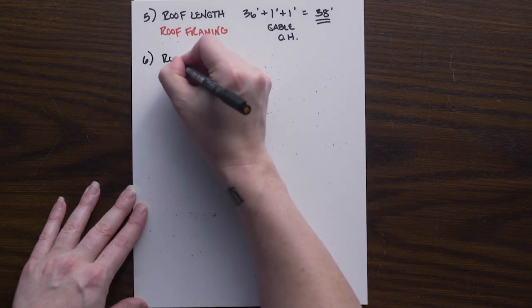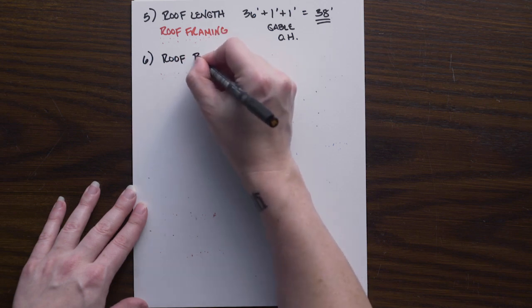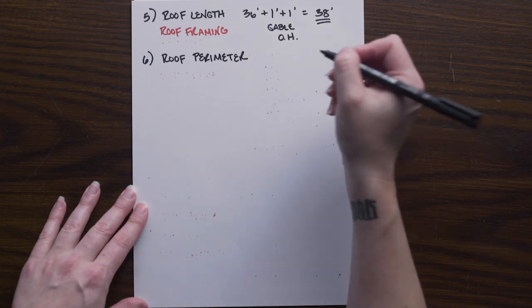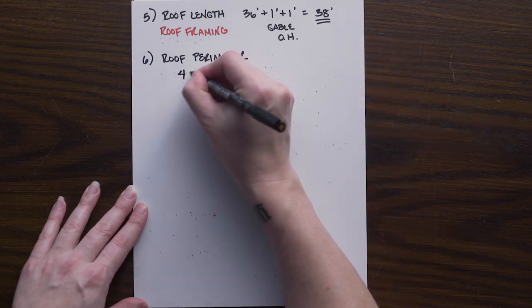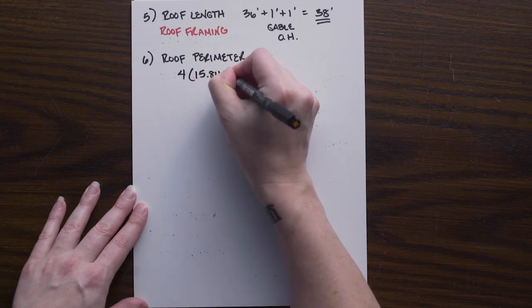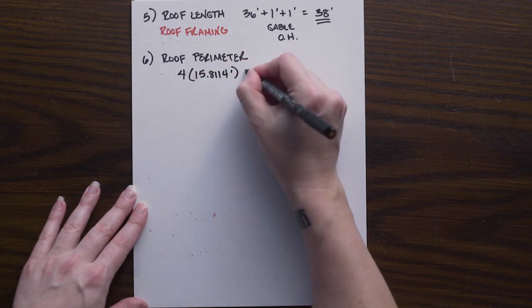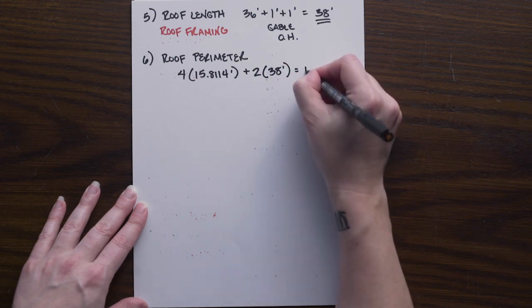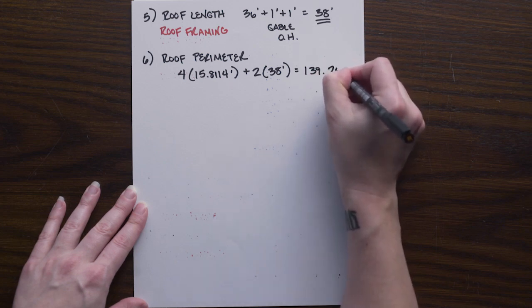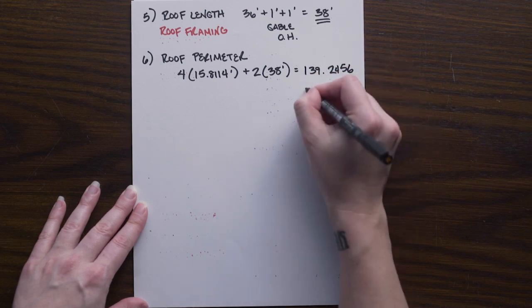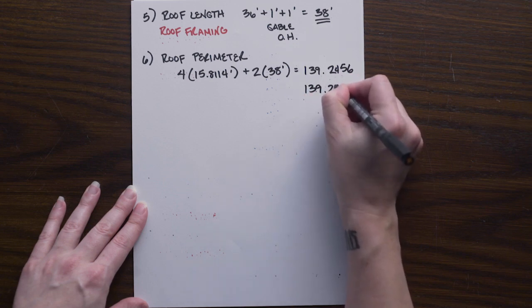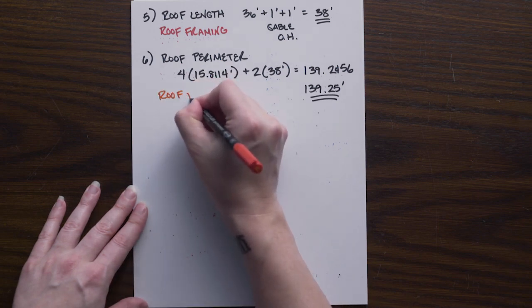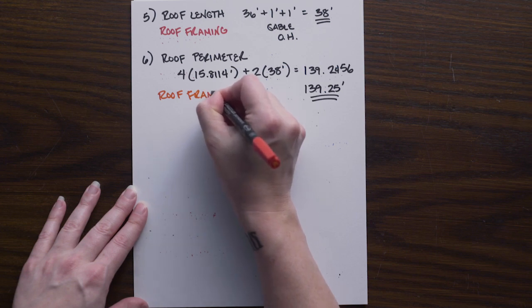Number six, the roof perimeter. We use the numbers we just calculated. We can take four times the 15.8114 top cord length, plus two times the length of our roof of 38 feet. And we get 139.2456. So I've just rounded it to 139.25 feet. And again, this came from the roof framing sample problem.